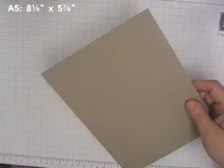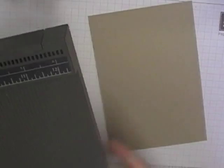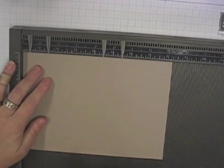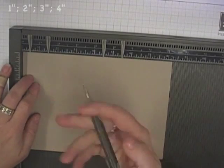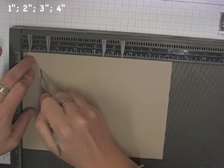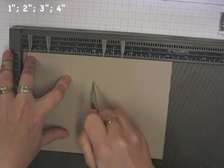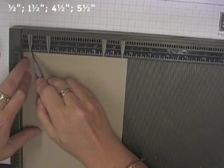And the scoring lines for this one, I'll write them at the top of the screen for you as well, but I'll do them for you on my score pal. On the long edge here, you'll see it's about eight and a quarter inches long. You just score at one, two, three and four inches this way.